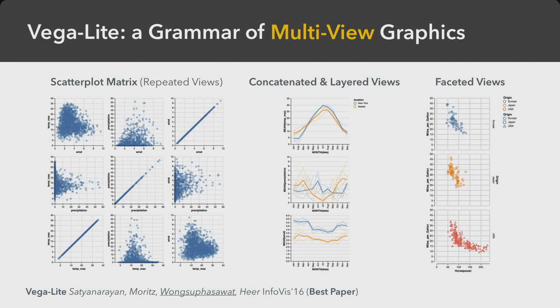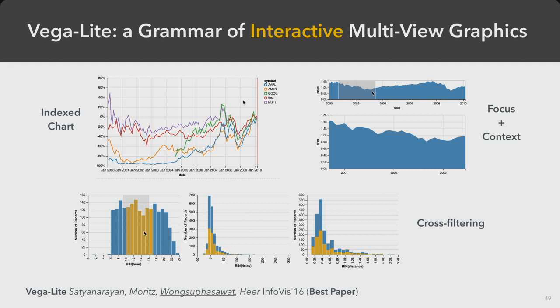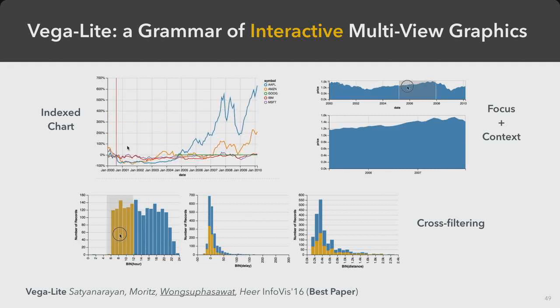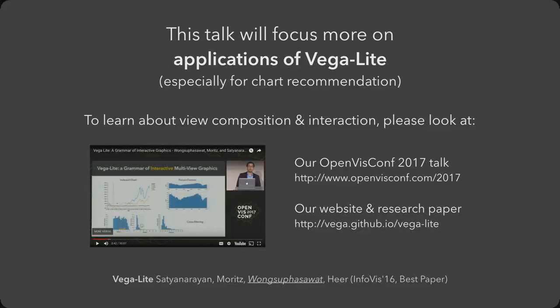We also extend Vega-Lite beyond existing grammars with an algebra for composing multi-view graphics, using operators like repeat for creating scatter plot matrices, concatenation, layering, and faceting for small multiples. We also present building blocks for specifying interactions on these composed views. All these building blocks are available in a single unified language. For more detail on view composition and interactions, our public talk is available on YouTube, our website, and in our research paper—including a version recorded at Microsoft's online platform.